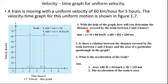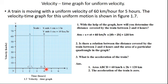The formula is distance = v × t. So distance = 60 kilometers per hour × (t2 − t1) = 60 kilometers per hour × (4 − 2) hours = 120 kilometers.